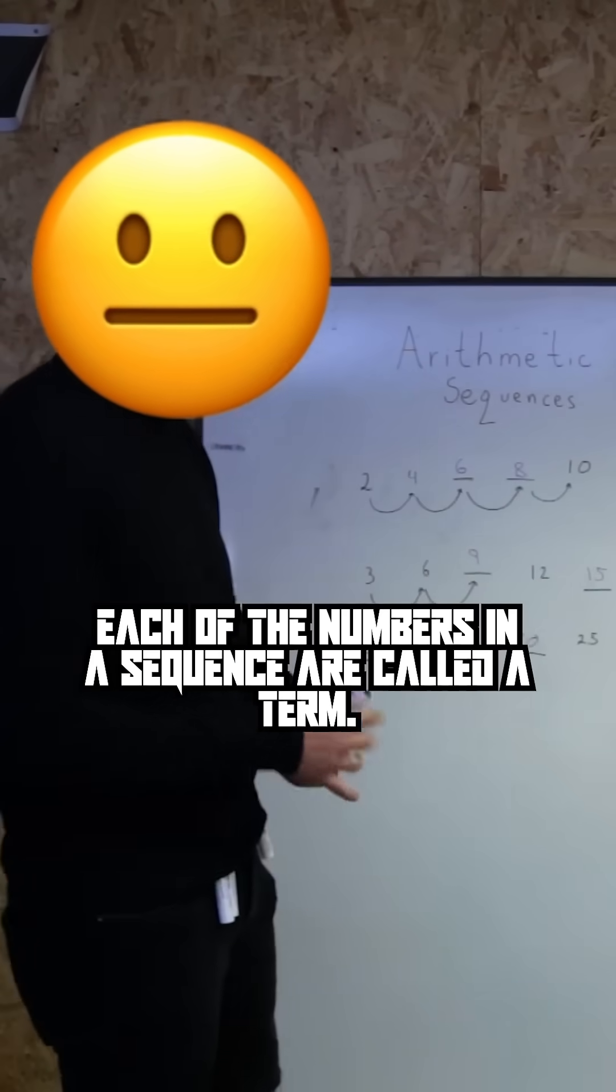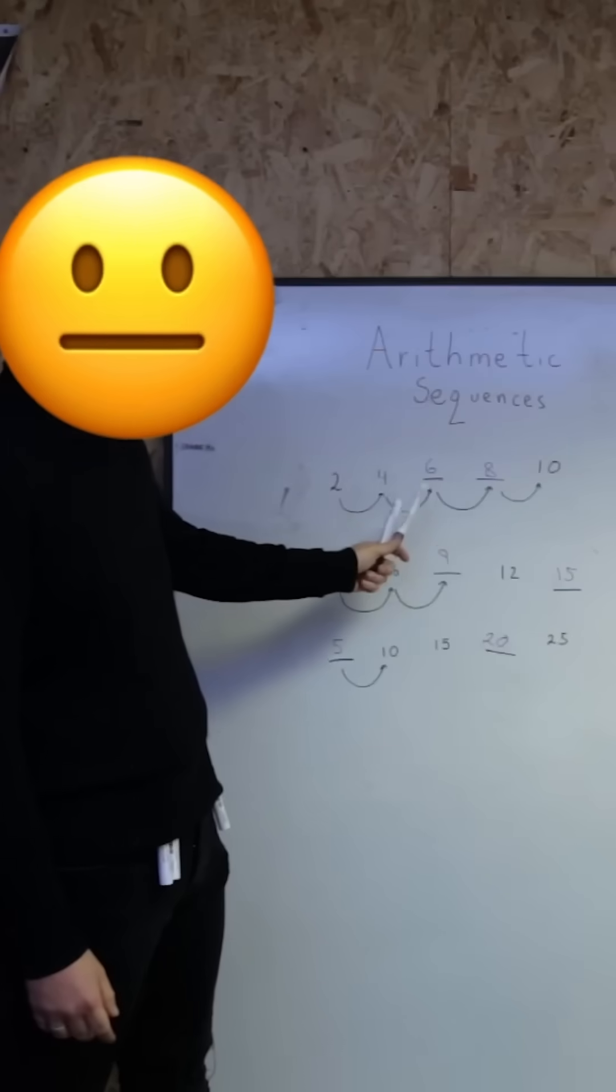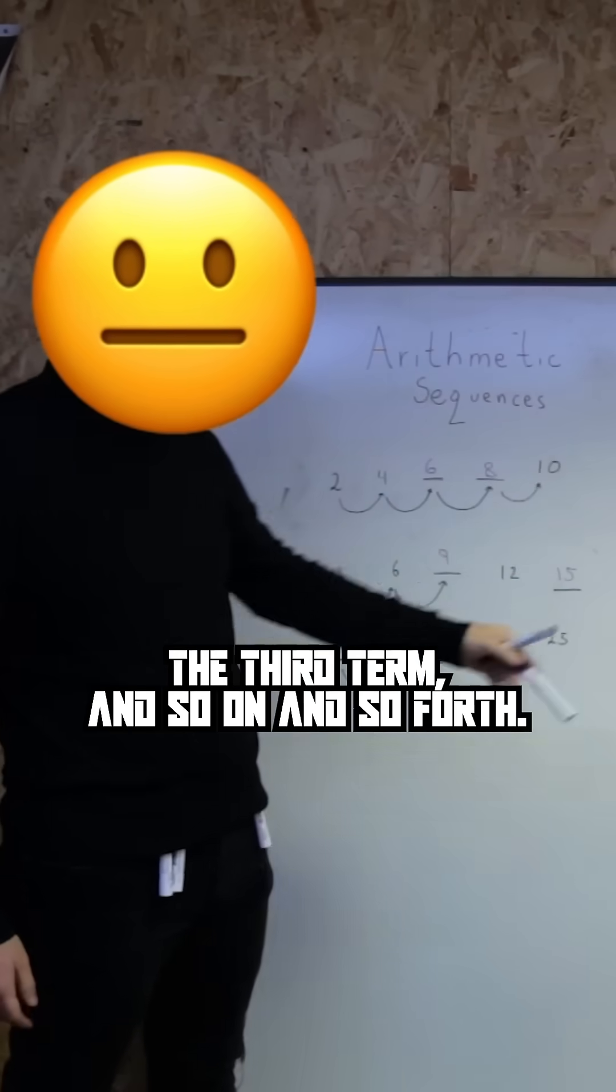Each of the numbers in a sequence are called a term. That's the first term. The second term, the third term, and so on and so forth.